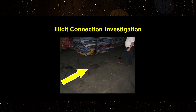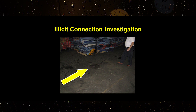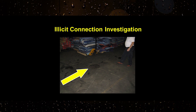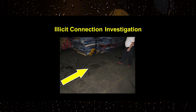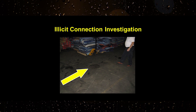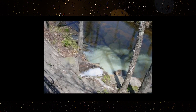The stormwater pollution prevention plan shall describe the actions taken to investigate potential illicit connections to the storm sewer system. All illicit connections to the separate storm sewer system or the waters of the state, such as an internal floor drain, should be permanently plugged or rerouted to the sanitary sewer system. Any connections to the sanitary sewer system will require authorization from the municipal wastewater treatment facility. Any discharge from an illicit connection is a violation of this permit.